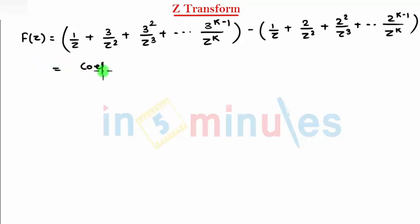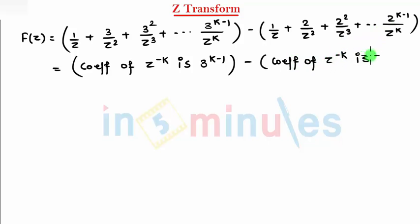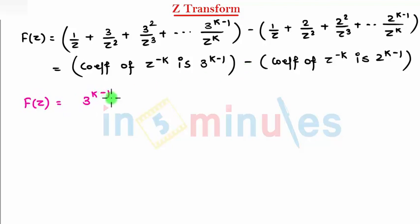So this becomes: the coefficient of z raised to minus k is 3 raised to k minus 1, minus the coefficient of z raised to minus k which is 2 raised to k minus 1. So finally, I can write f(z) as 3^(k-1) minus 2^(k-1). That's my final answer.